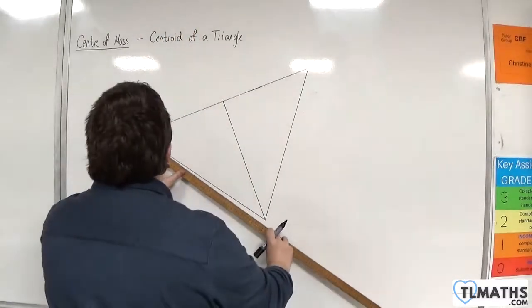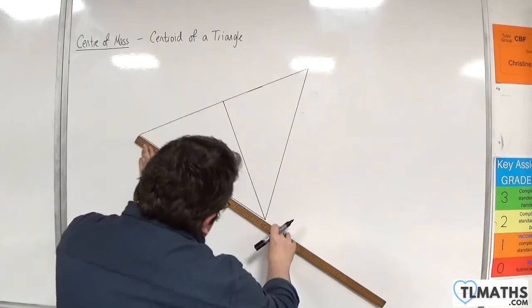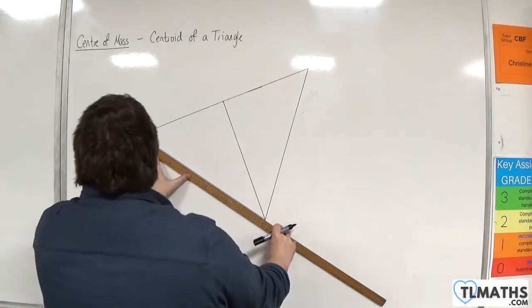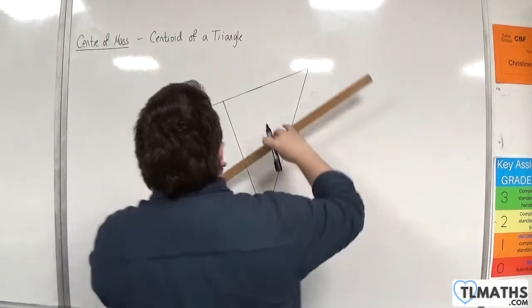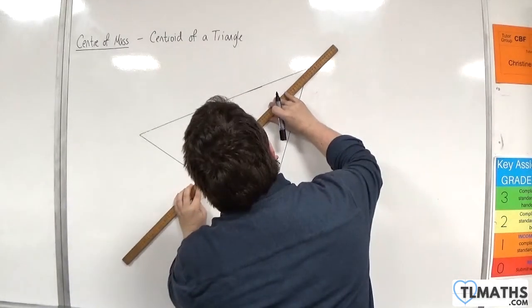Now for this side, we have 50 centimeters, so 25, and it goes through that corner.